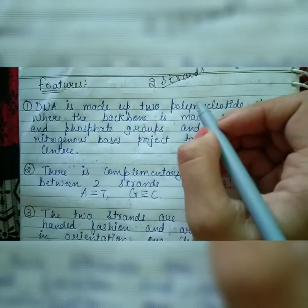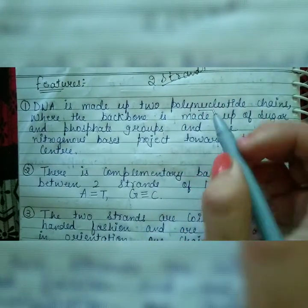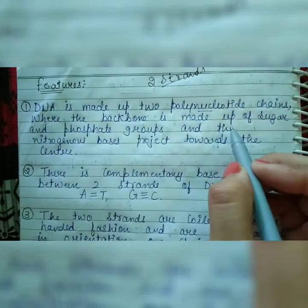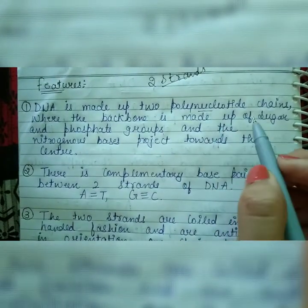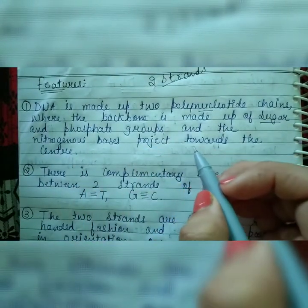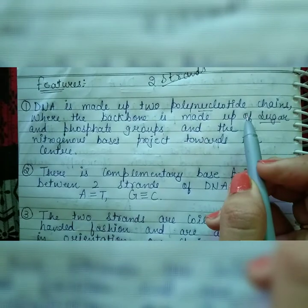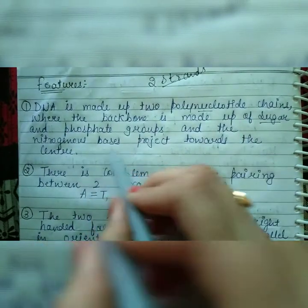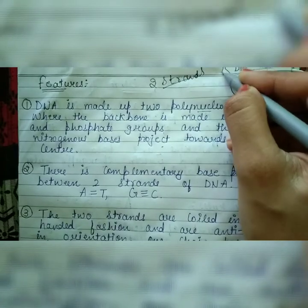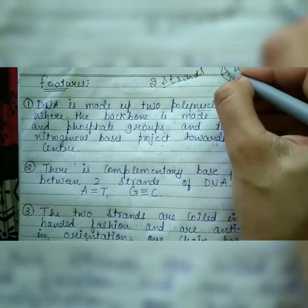The polynucleotide chains are formed by combining nucleotides. The backbone of the polynucleotide chain consists of pentose (deoxyribose) sugar and phosphate groups. The nitrogenous bases are present in the center, on the inside — not on the outside.